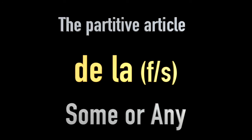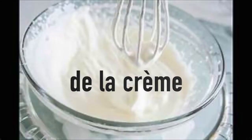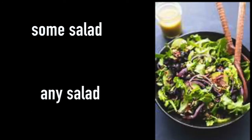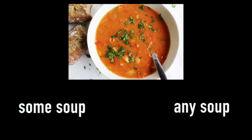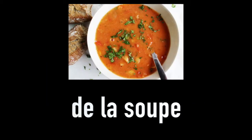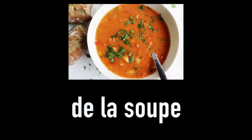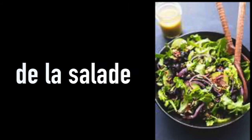The partitive article for feminine nouns — we would use de la. So for example, some or any cream — de la crème. Some or any ice cream — de la glace. Some or any salad — de la salade. Some or any soup — de la soupe. So our partitive article for feminine nouns is de la: de la soupe, de la crème, de la glace, de la salade — even de la pizza.